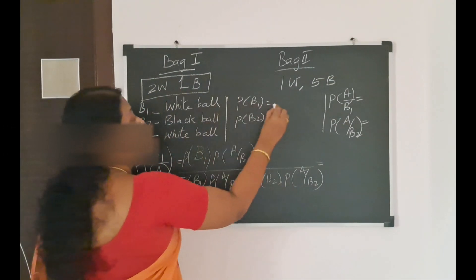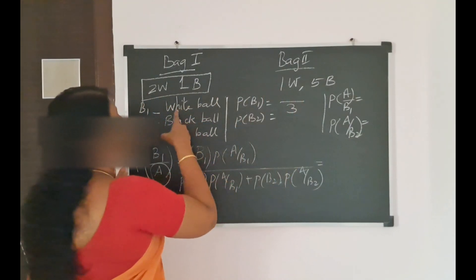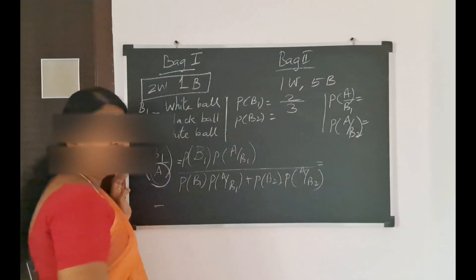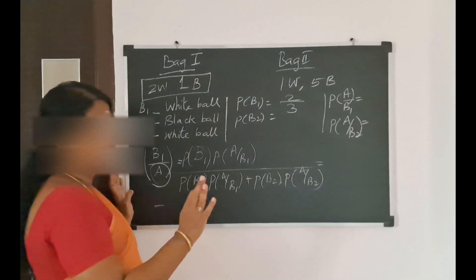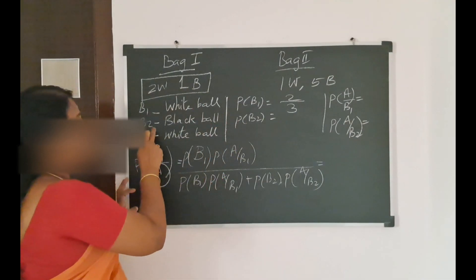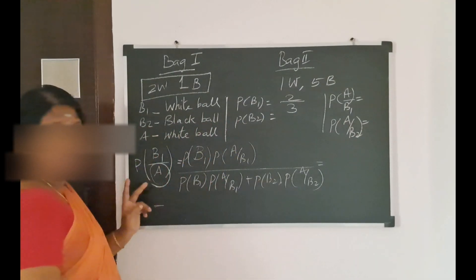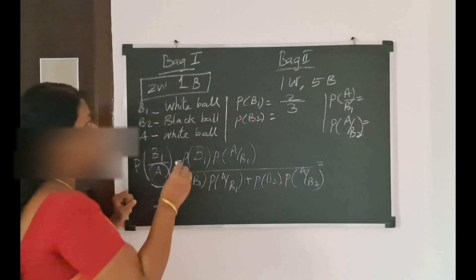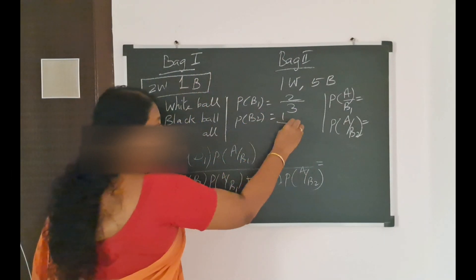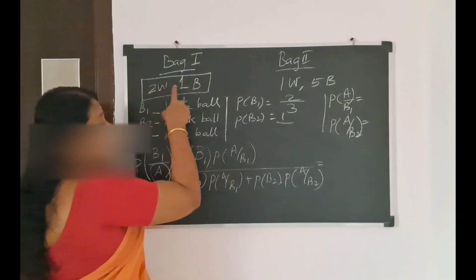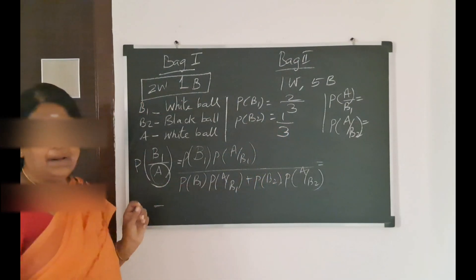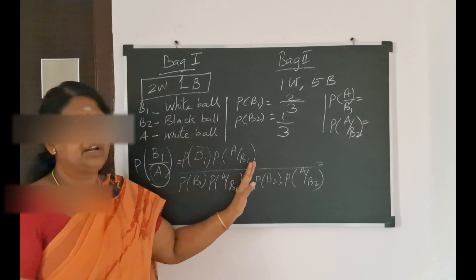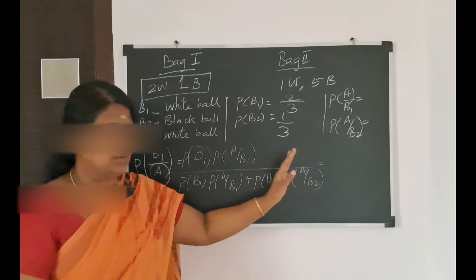There are three balls in Bag 1. So the probability of B1, probability of B2 — each is 1 divided by 3.